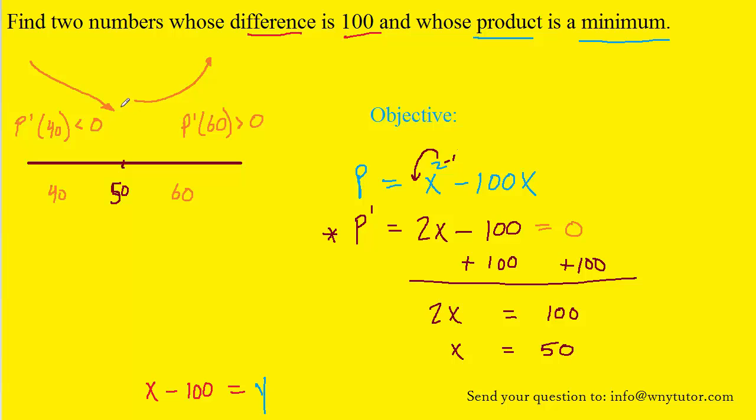Now hopefully we can see from this diagram that right at 50 we would indeed have minimized the function. You can almost connect these two arrows and draw a graph, and you would see that indeed you have a minimum point when x equals 50. So 50 turns out to be the correct value of x, which is our first number.